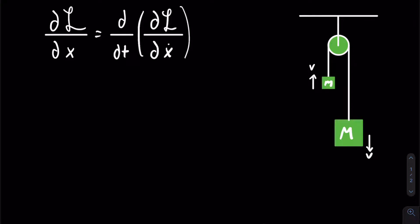Hello, this will be a relatively shorter video, and we will be focusing on how to find the equations of motion for an Atwood machine using the Lagrangian. So up top we have our equation that we will be using, and on the right we have our Atwood machine. It has two masses, one of mass capital M, one of mass lowercase m, and the pulley is massless.